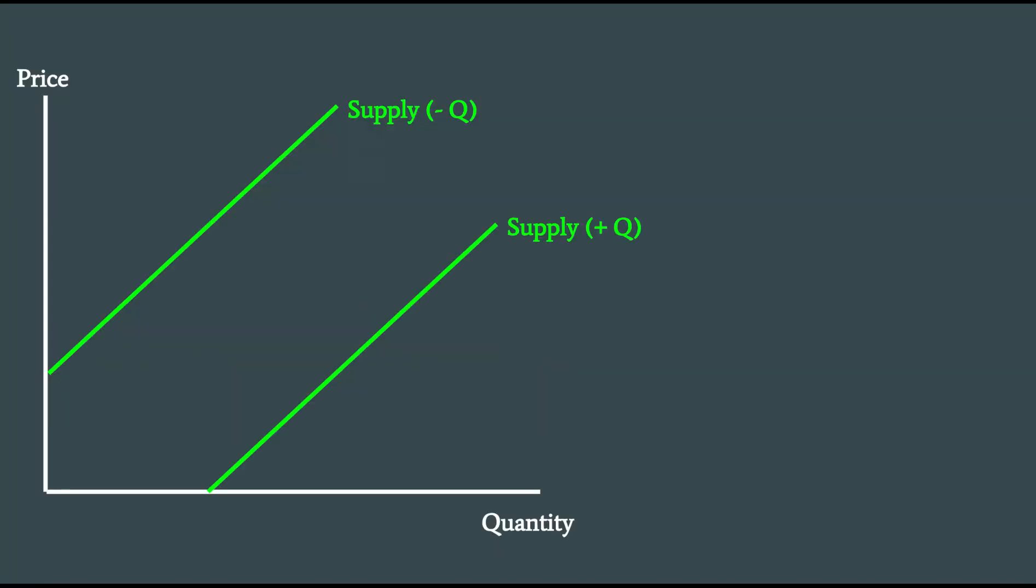So let me show you why. If we think about the supply curve, this one has a negative Q-intercept, because it intercepts the price axis at a positive price, that means its Q-intercept is over here to the left somewhere, negative. And this one has a positive Q-intercept right here.